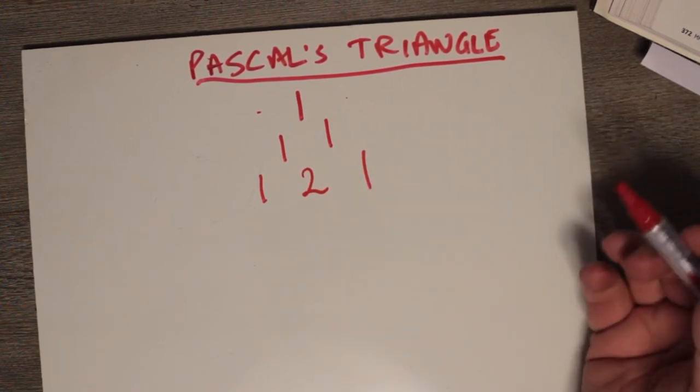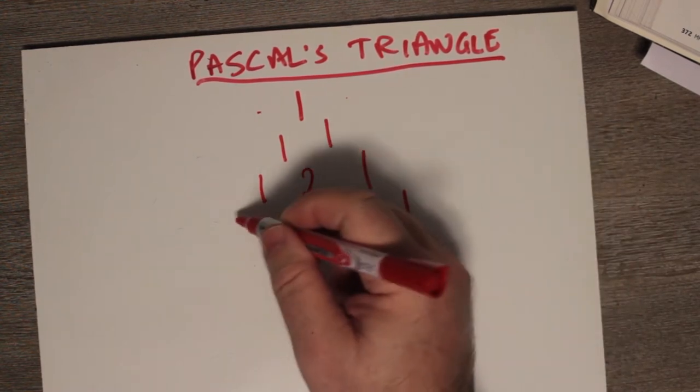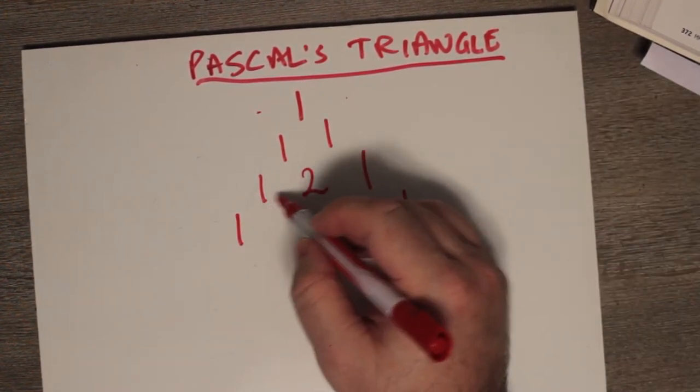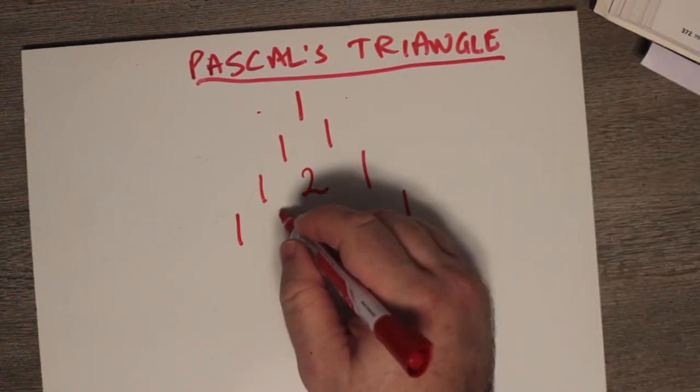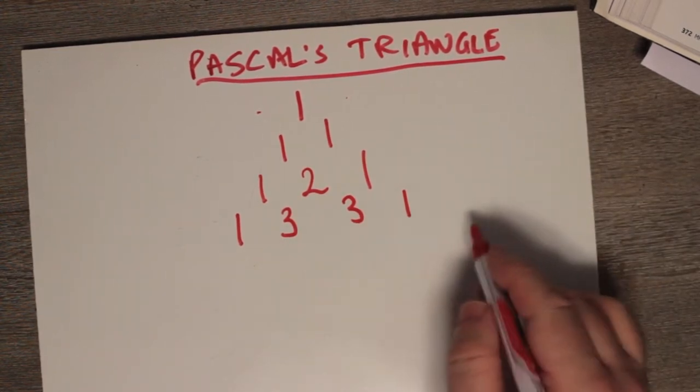Now, the zeros don't really matter, except they give us the basis, they give us a reason for regenerating these ones on the ends, but the ones in the middle, basically you're just adding the two numbers above and getting the number below. So two and one make three, one and two make three, and you get one, three, three, one.